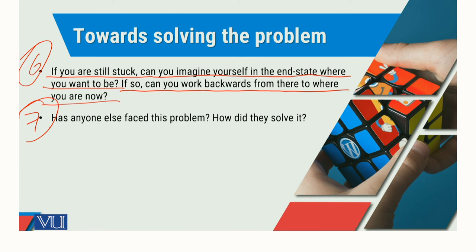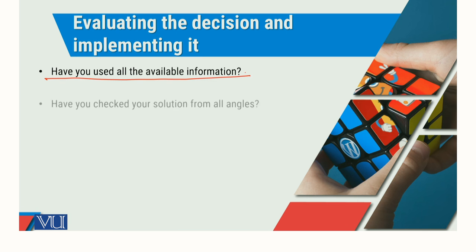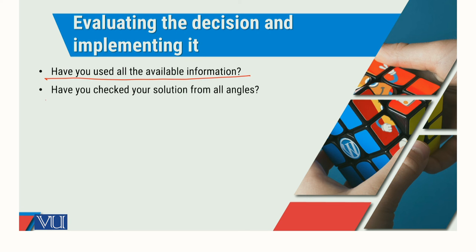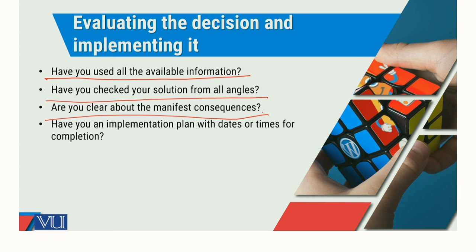The seventh step: has anyone else faced this problem, and how did they solve it? We can draw conclusions from precedents and trends as well. If we have to talk about evaluating the decision and implementing it, there are a few things to understand. First, have you used all the available information? Second, have you checked your solutions from all angles? Third, are you clear about the manifest consequences? Fourth, do you have an implementation plan with dates or times for completion?